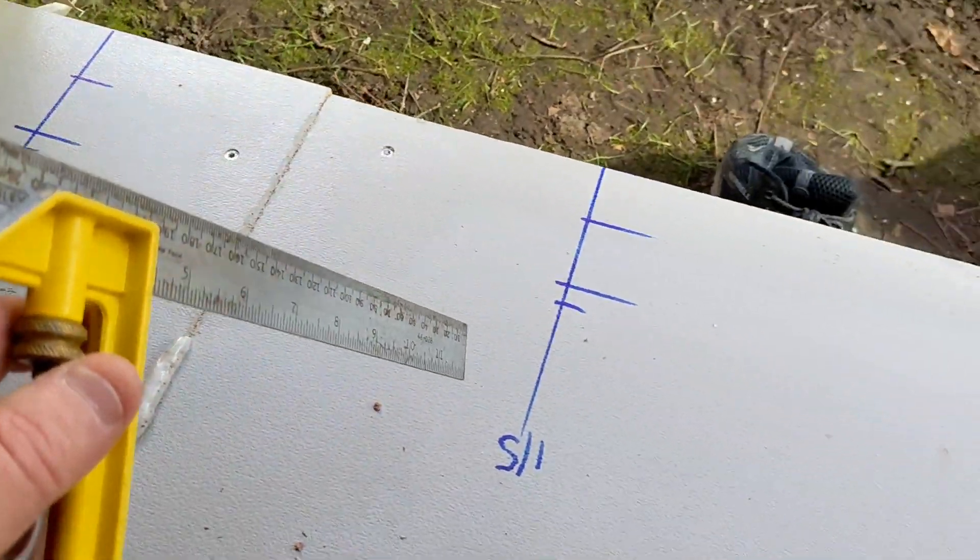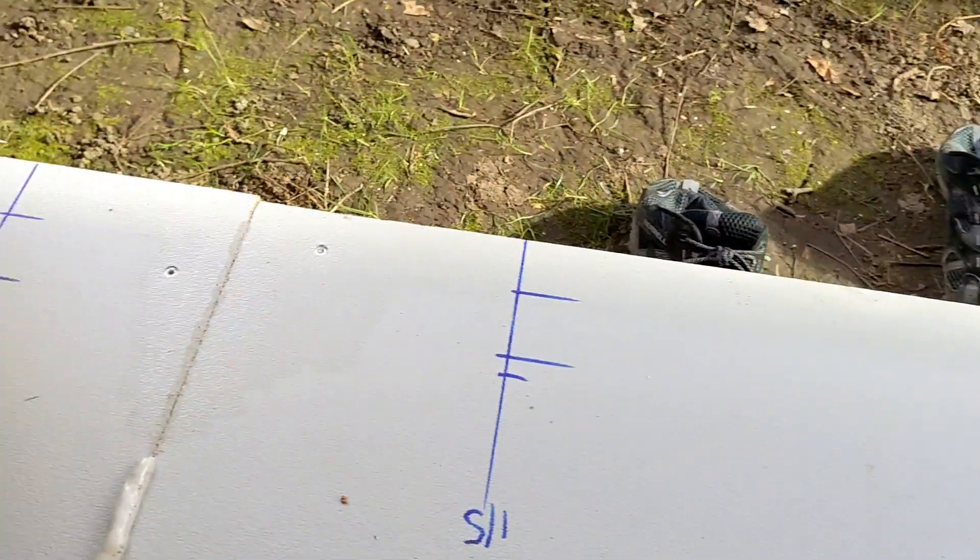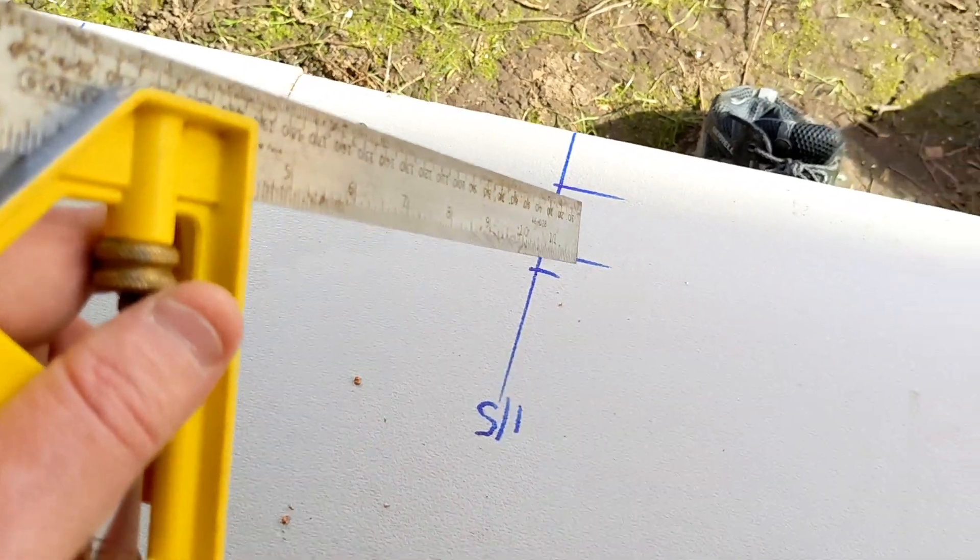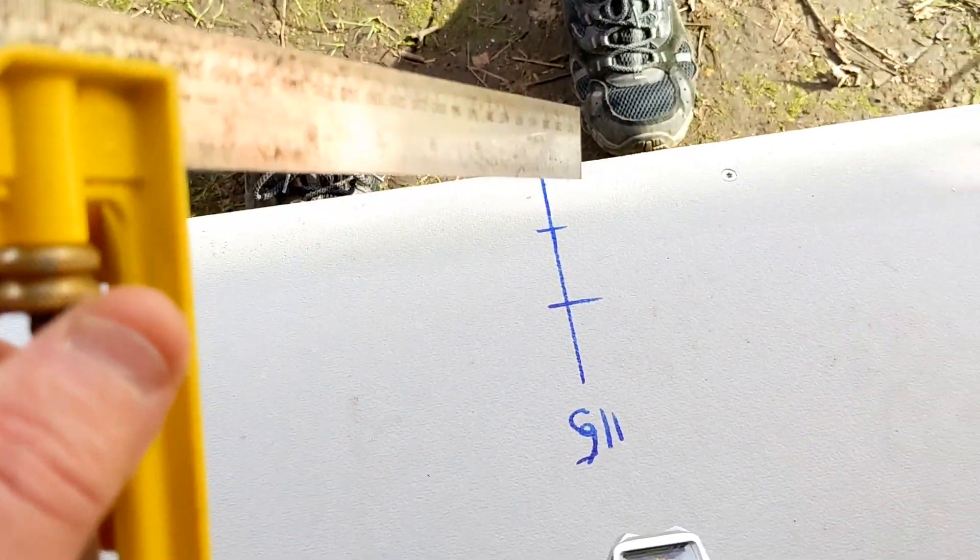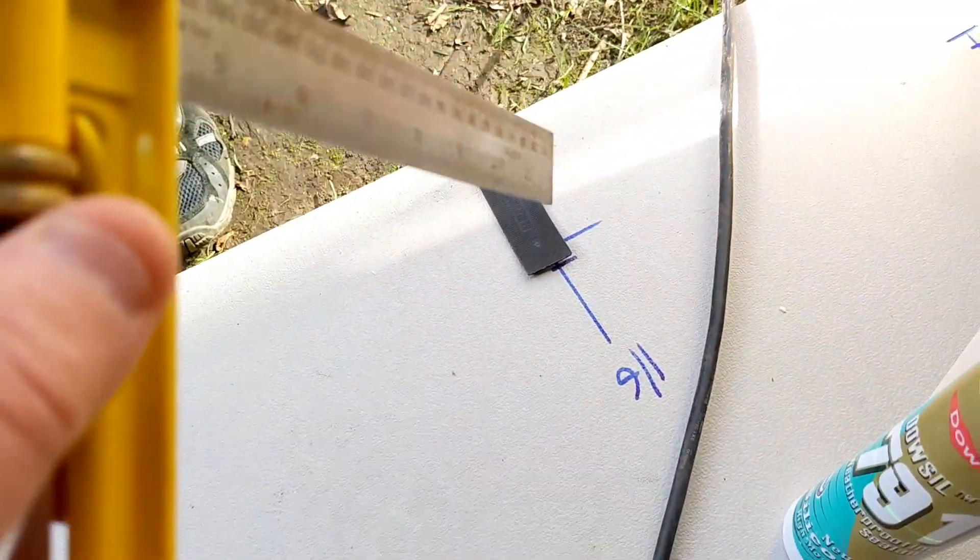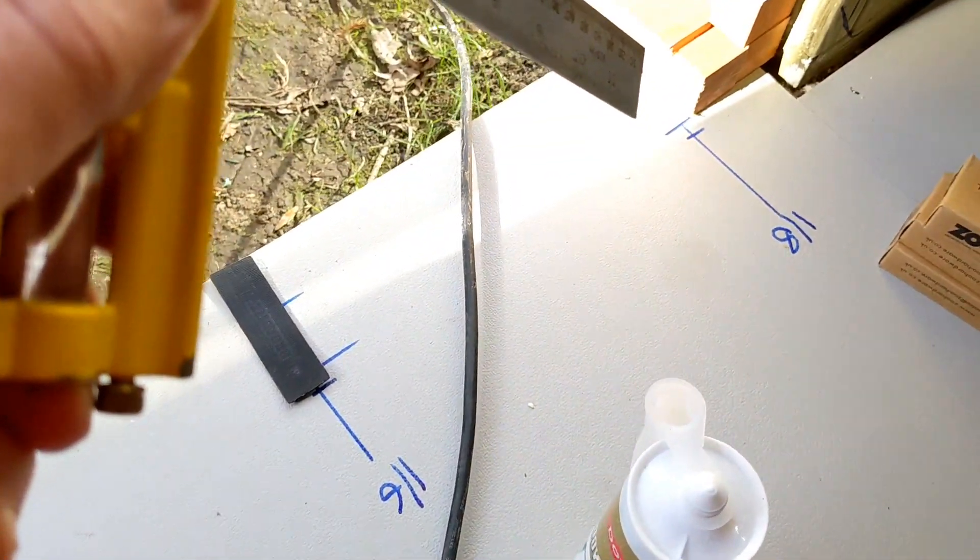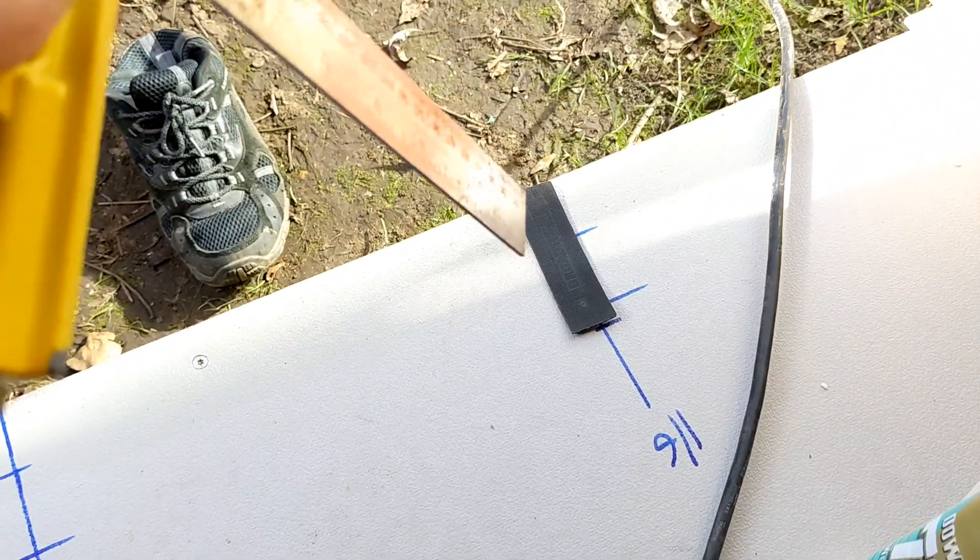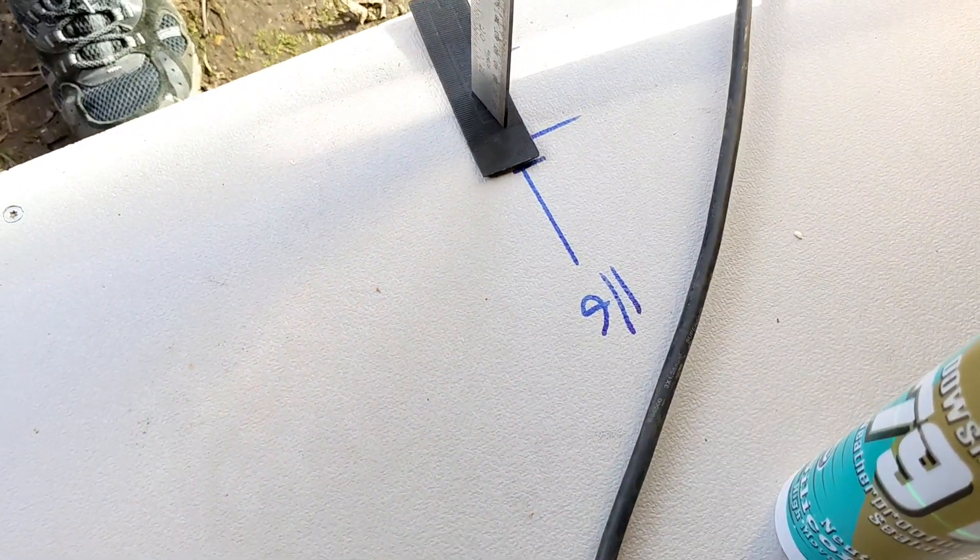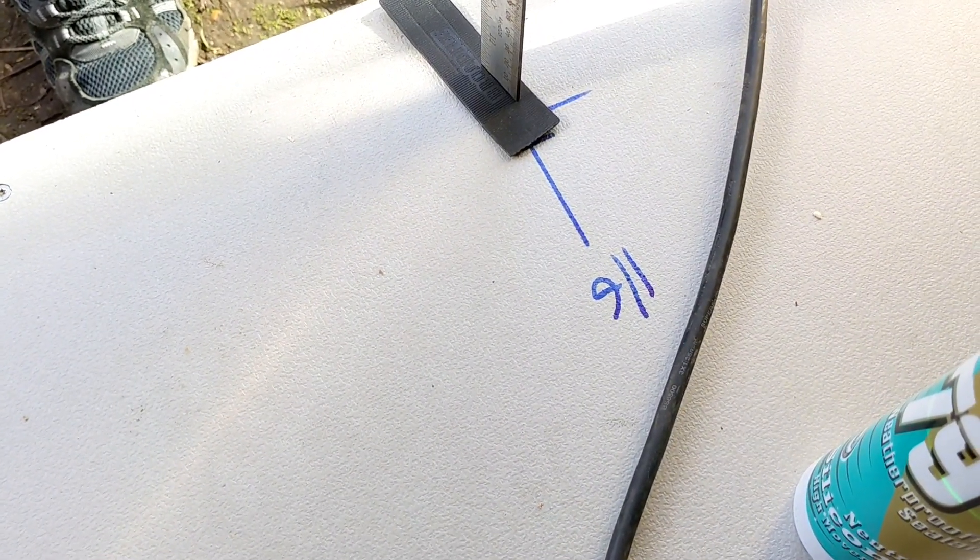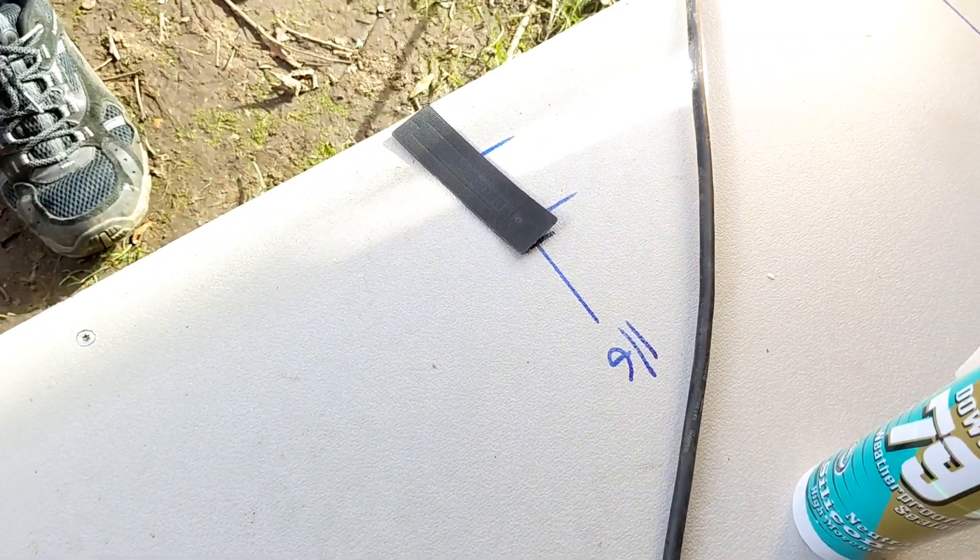Each of my fixing points, this is 115, same as that, 115, same as that one. Then it's sloping down slightly there, 116 and 118. So then I pack this one up, but it should be one mil, not a two mil packer.